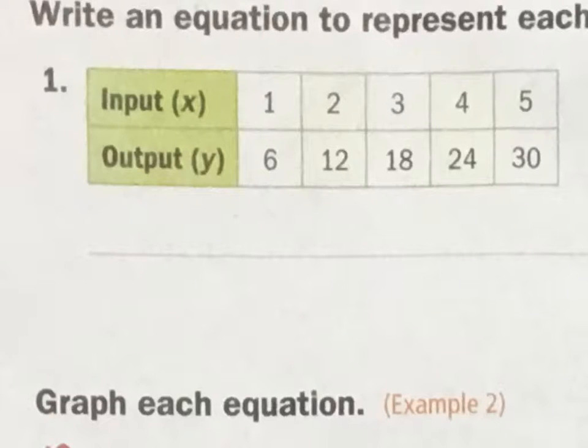All right, this is independent practice for 8.3. Number one, we have to write some equations. We want to see what is happening from x to y. And if the same thing happens to all of them, then it's our equation.